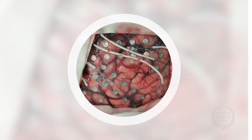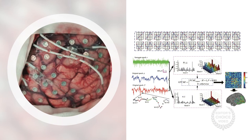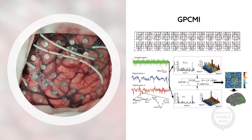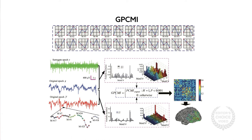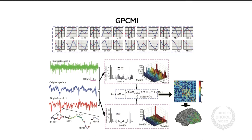To assess information integration, the team used a measure called Genuine Permutation Cross-Mutual Information, or GPCMI. In an earlier study, they found the measure performed better than others using scalp EEG recordings. This time, they wanted to see whether GPCMI could be used to estimate information integration at the cortical level with electrocorticograms.